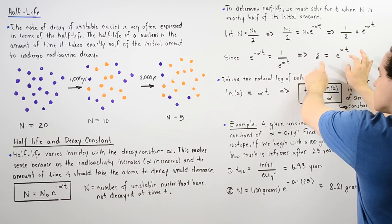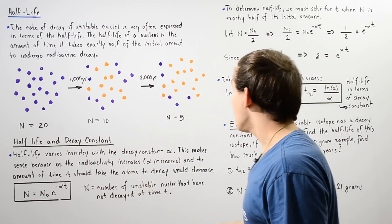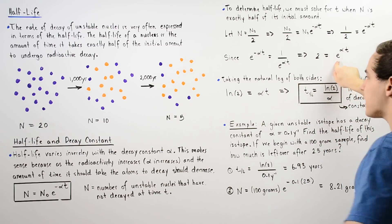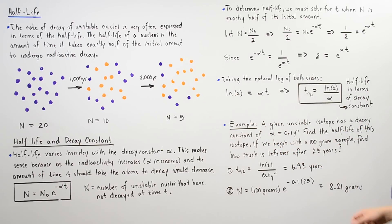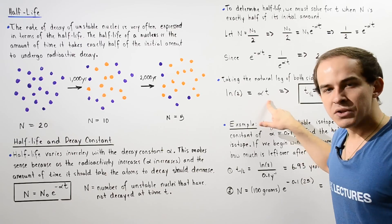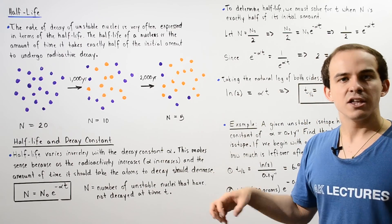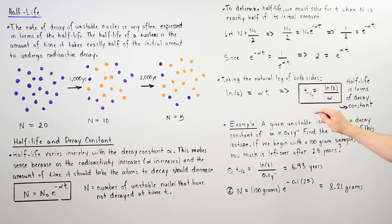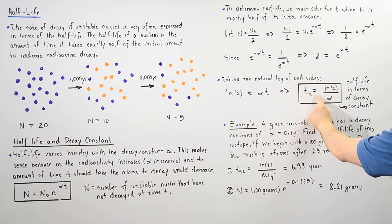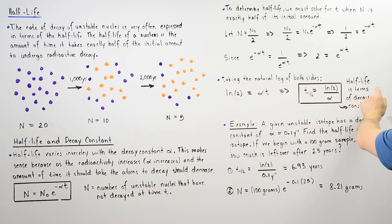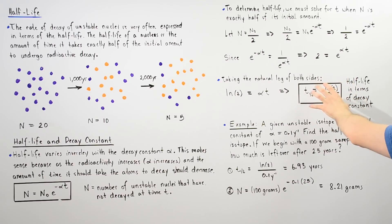Because e to the negative alpha times t equals 1 divided by e to the alpha times t, we rearrange to get 2 equals e to the positive alpha times t. Taking the natural log of both sides, the e cancels, and we get the natural log of 2 equals alpha times t. Solving for t, which represents the half-life designated t-one-half, we get: t-one-half equals the natural log of 2 divided by alpha, the decay constant.